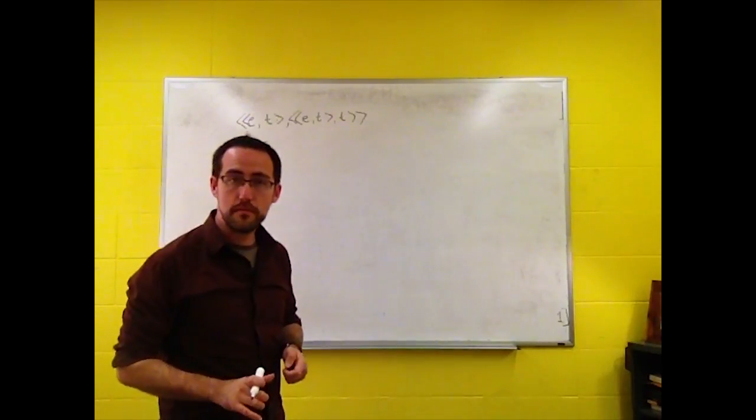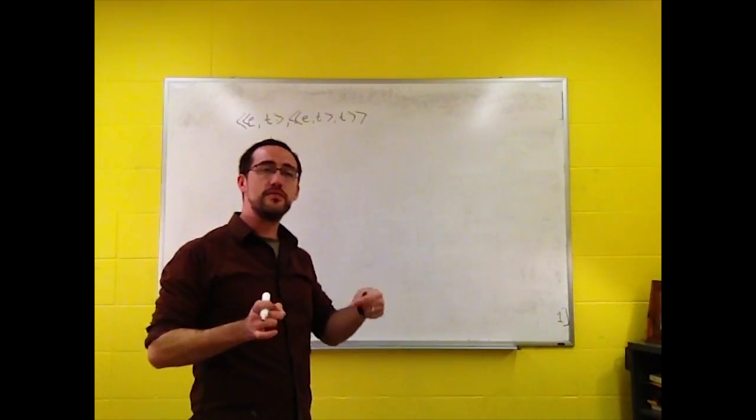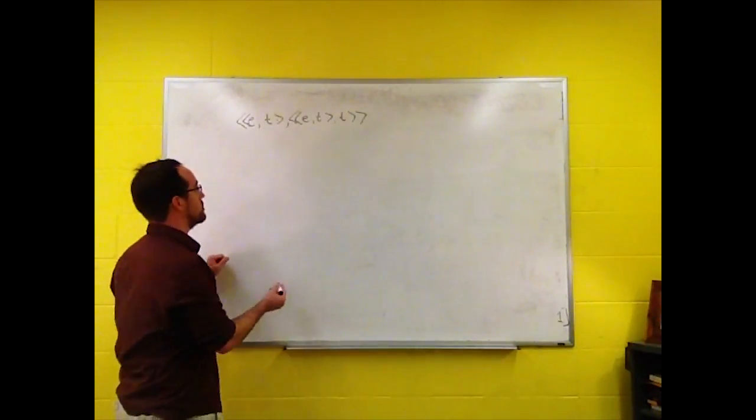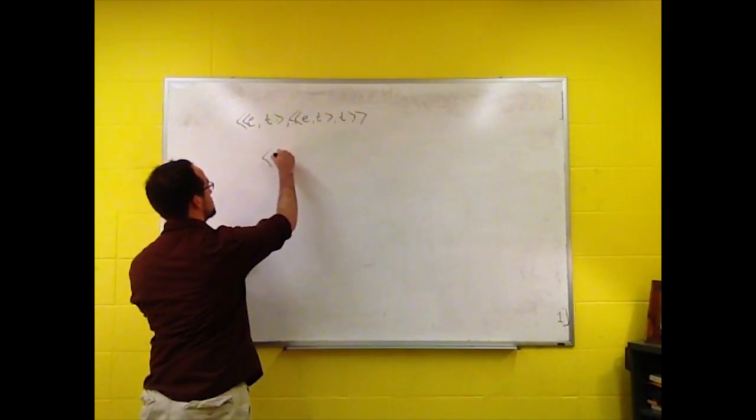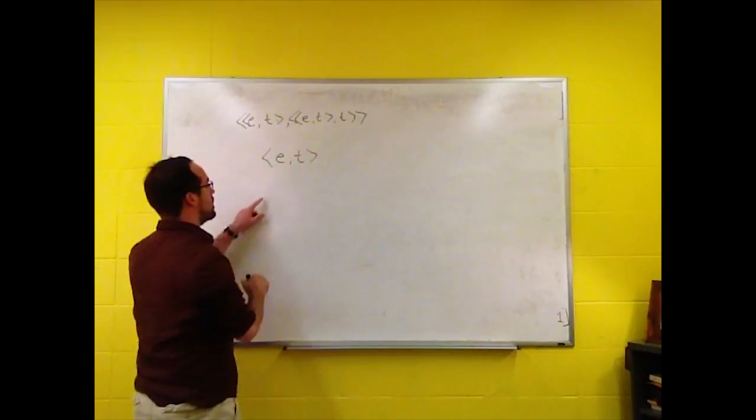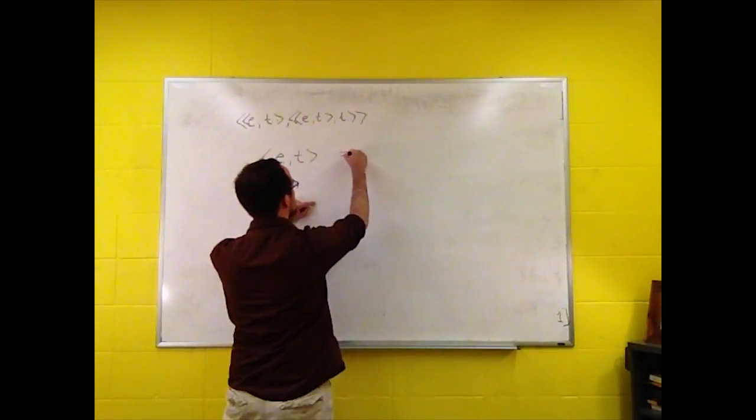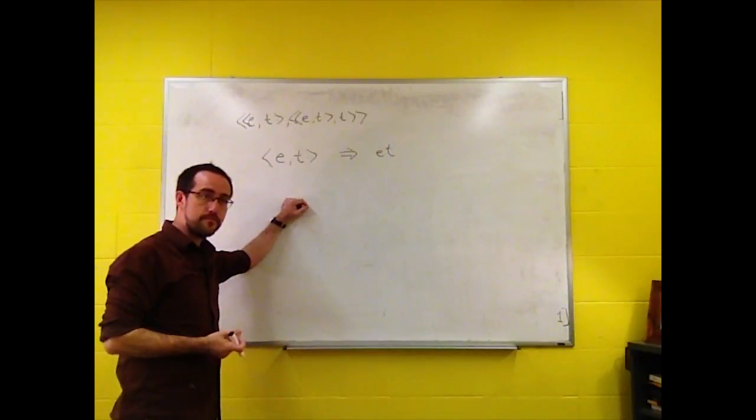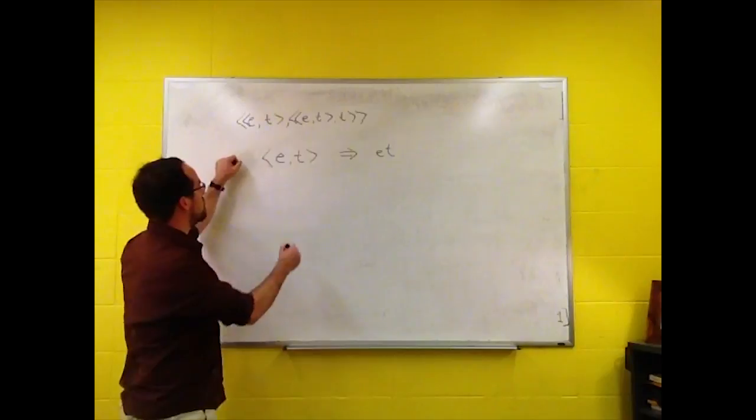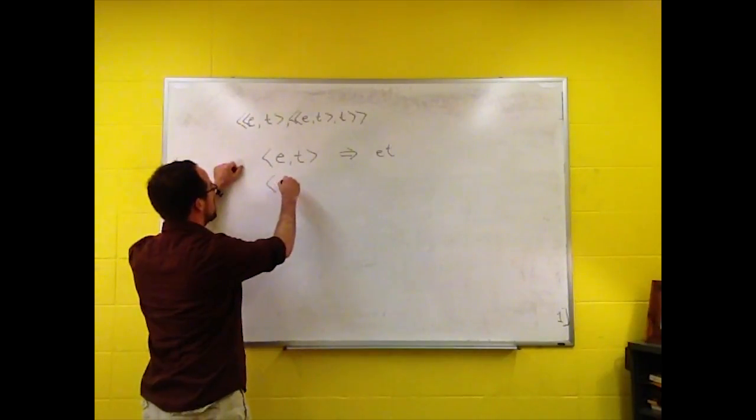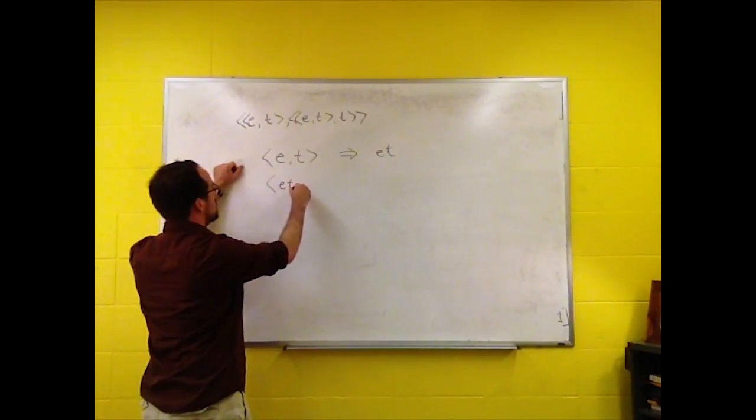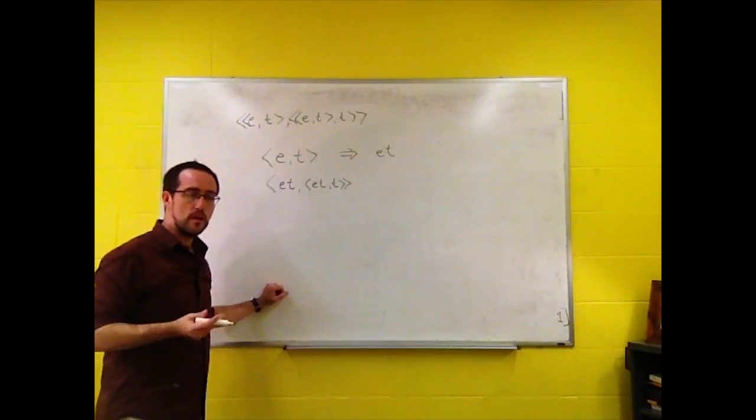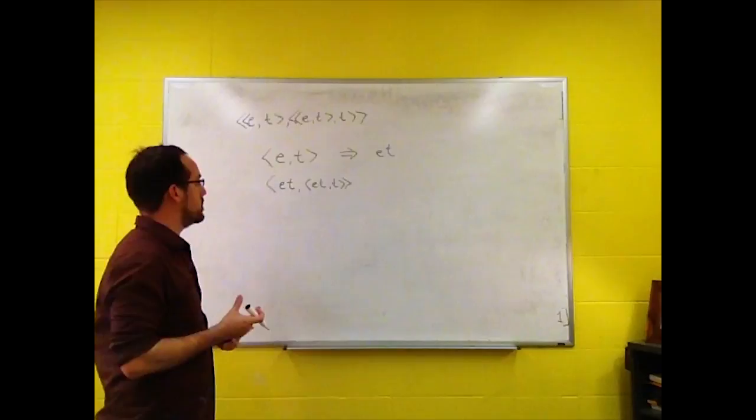Now, when we have a complex type that itself is composed of two simple types, then we can abbreviate that in a very straightforward way. For instance, ET, we can write it like this, or we can just write it ET. And so this would become ET, ETT. And that works out pretty well.